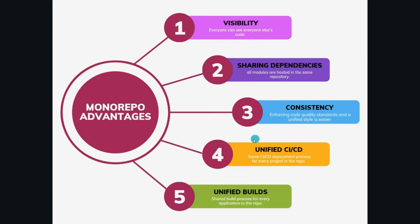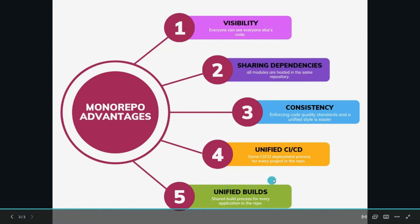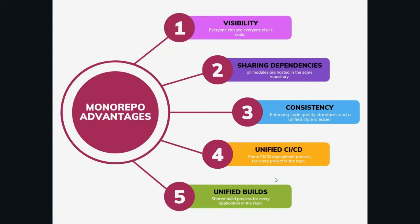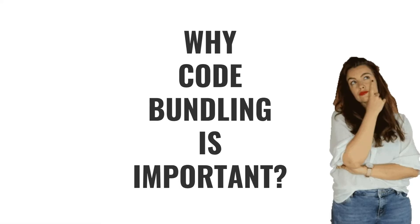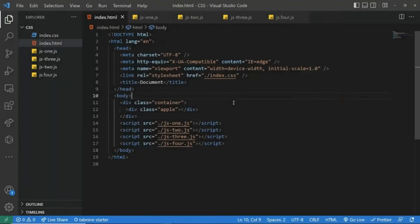Number four: unified CI/CD — the same CI/CD deployment process for every project in the repo can be implemented. Number five: unified builds — a shared build process for every application in the repo.